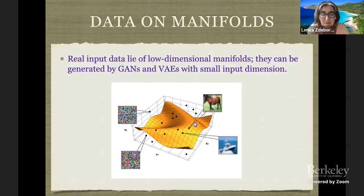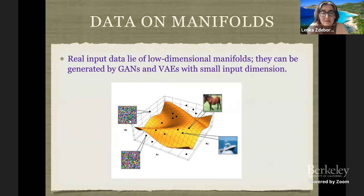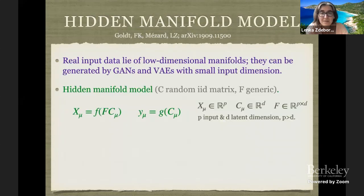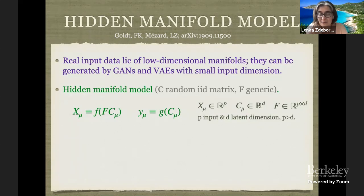Pictorially: the input space might be three-dimensional, there is some sub-manifold on which the interesting data lie, and a lot of space around that is just unstructured noise. When learning, I don't want to learn the function on that outer part because that's not where my data lie. The very existence of GANs and VAEs attests to this, and we take inspiration from that to build a model that looks like a generator of a GAN or VAE but is still solvable with the same precision down to constants as in the simple i.i.d. case.